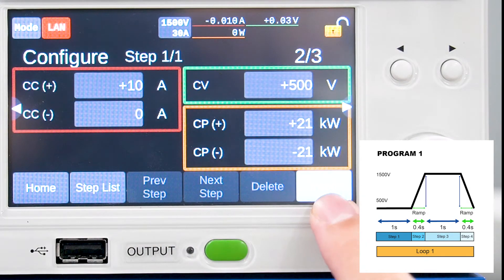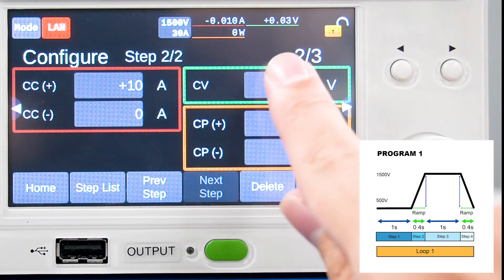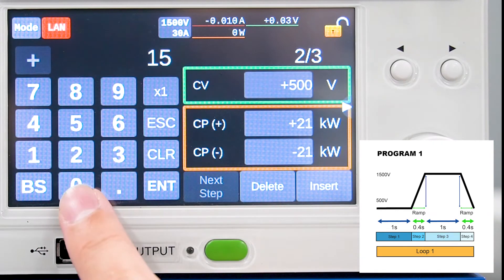Press insert to edit step 2. Next, we'll edit step 2. Change the voltage to 1500 volts.